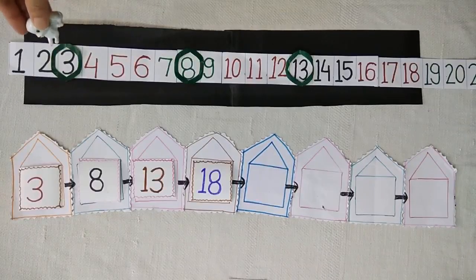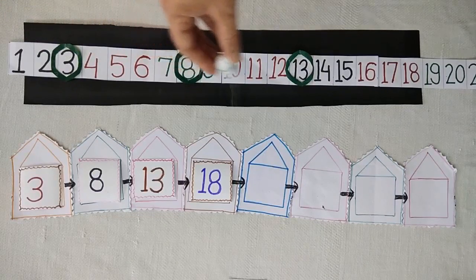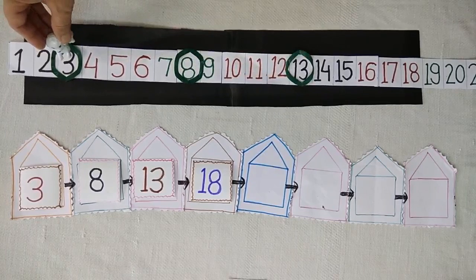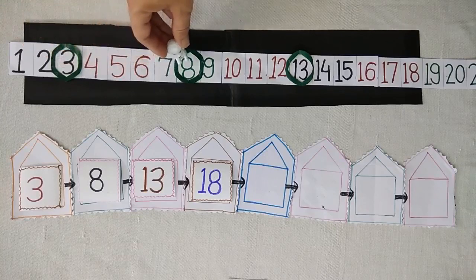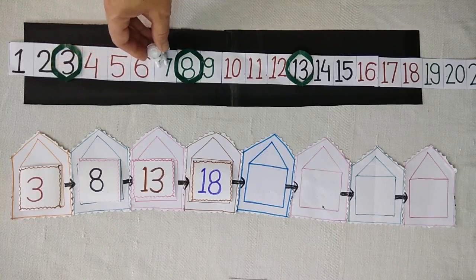Now, Jimmy is standing on 3. Jumps to 8, 13. Let's see how many numbers does it skip when it jumps from 3 to 8. Count with me: 1, 2, 3, 4.